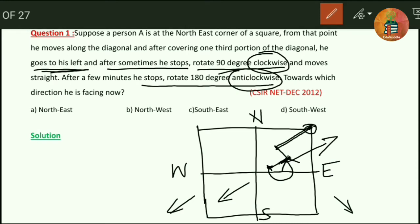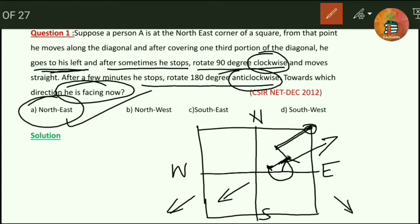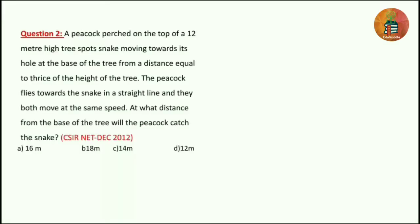After the 180 degree anti-clockwise rotation, he will be facing towards the north-east direction. So our final answer is that person A will be facing the north-east direction.